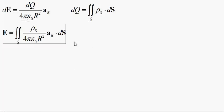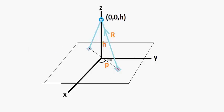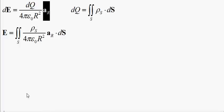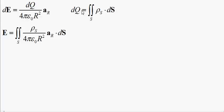If you remember from the previous video where we did a line charge, we had this differential element of electric field equal to this, where A sub R is in the direction of this R. This is the magnitude of that R, this is the differential charge, and this is the constant always in the denominator. We also said that the surface charge was equal to this surface integral — the surface charge density over the surface.